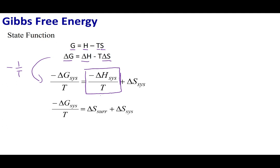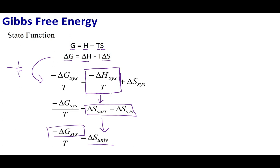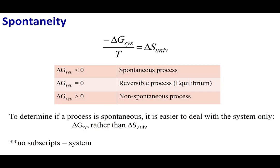So I can replace that by delta S of our surroundings. From our last lecture, if I take the delta S of our surroundings and add the delta S of our system, that's going to be the delta S of our universe. Delta G is going to be related to delta S of our universe, and delta S of our universe tells me if a process is going to be spontaneous or not.